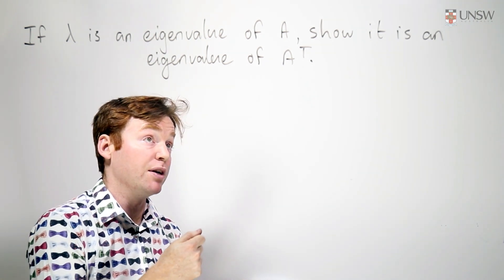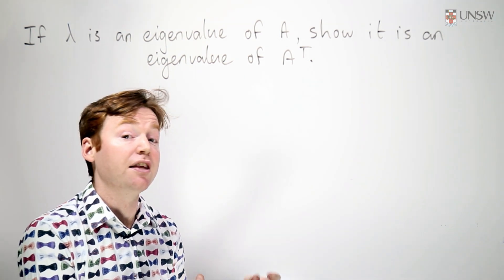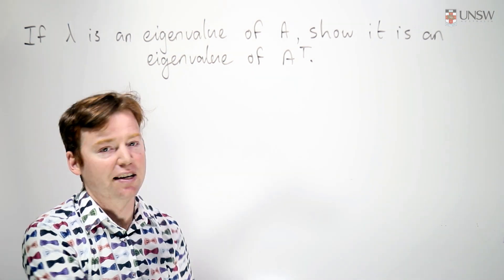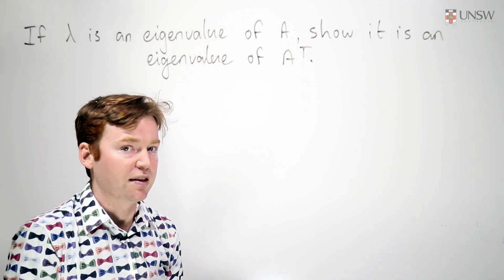And so we'll see that the matrices A and A transpose actually share the same eigenvalues, although their eigenvectors might be completely different. The eigenvalues are the same.